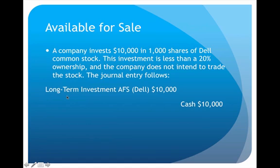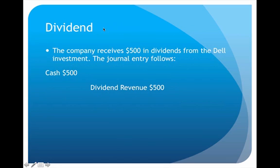When I record this journal entry on the day of purchase, I debit Long-Term Investment AFS (Dell) for ten thousand dollars. By including the company name in parentheses, it's easier to track investments if I ever decide to sell. Then I credit Cash for ten thousand dollars to show that I've spent the money. That is recorded on the day of the investment.